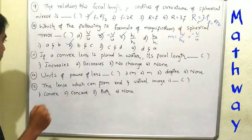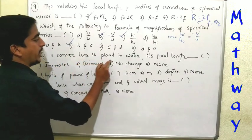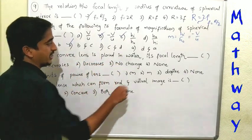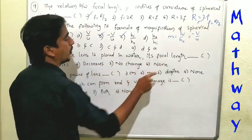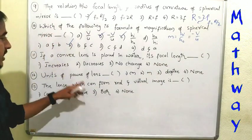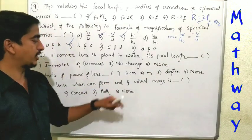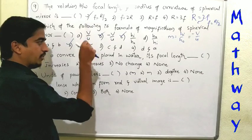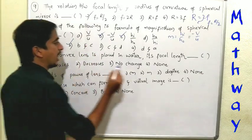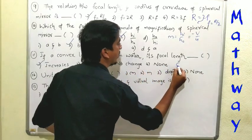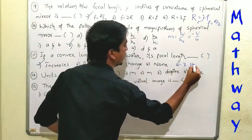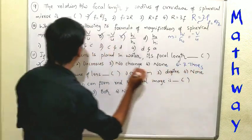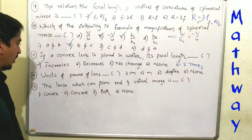Eleventh question: if a convex lens is placed in water, its focal length is — increases, decreases, no change, or none? If you put the convex lens in water, the focal length will increase, around six to seven times. So the focal length increases. Option one.